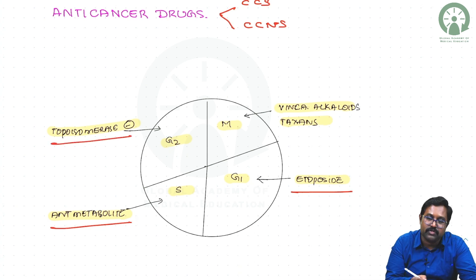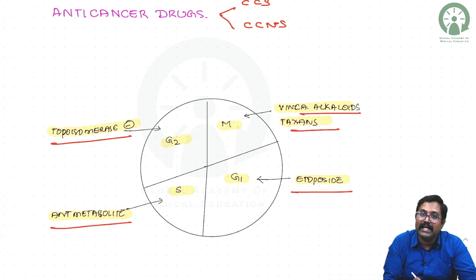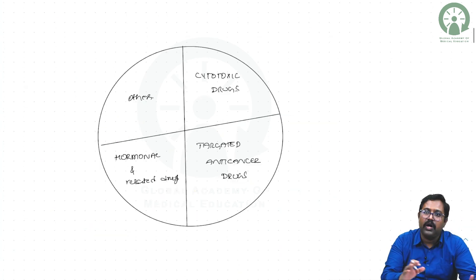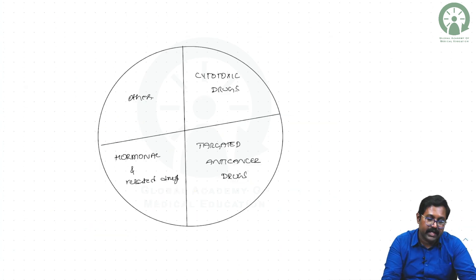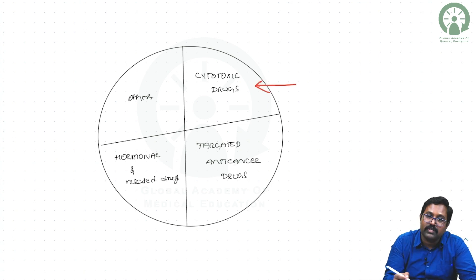Broadly, you can classify anti-cancer drugs into those with cytotoxic action, those with targeted action, and those related to hormones and the miscellaneous group of drugs.